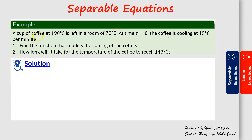Now we go to the example. A cup of coffee at 190 degrees C is left in a room of 70 degrees C. At time t equal to zero, the coffee is cooling at 15 degrees C per minute. The first question asks you to find the function that models the cooling of the coffee.